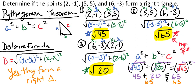So in order to determine if three points form a right triangle, find the three distances between the points, then plug them into the Pythagorean theorem. If the Pythagorean theorem holds, then those three points form a right triangle.